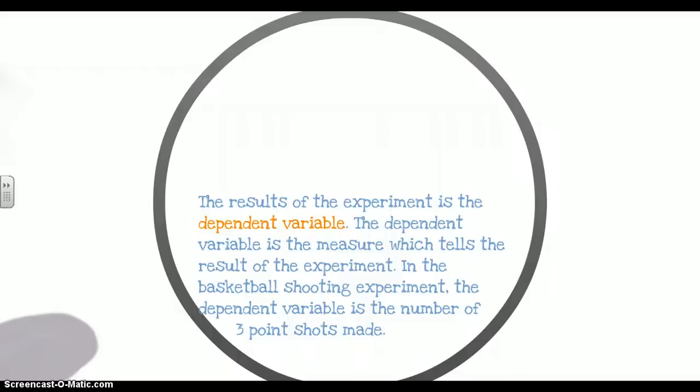Even though that sounds confusing, it's really not. In our basketball shooting, the independent variable was the person shooting the ball—we had Rashard Lewis and Daquan Cook. The dependent variable is then changed because of those people. Our dependent variable is the number of shots made.